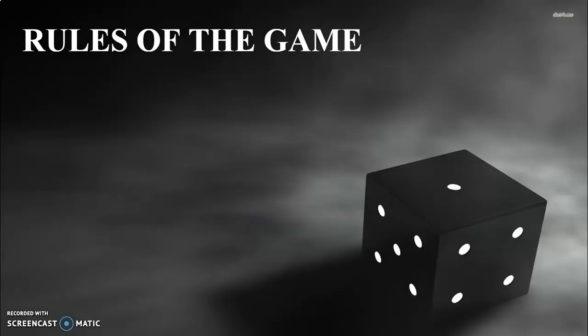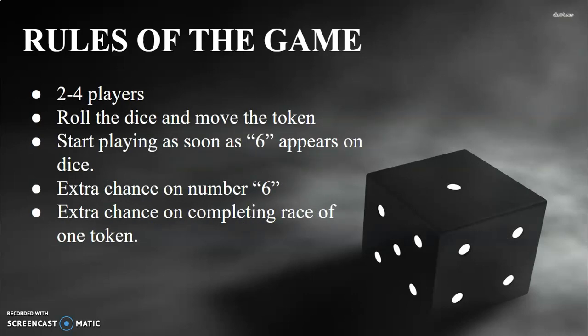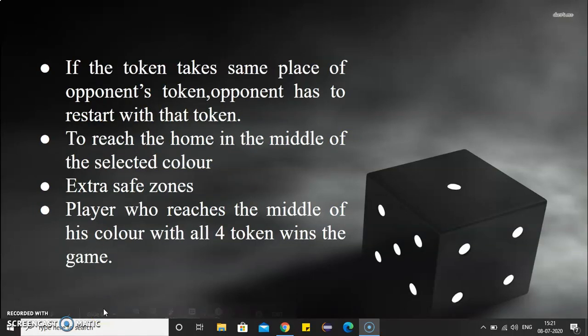Now come the rules of the game. It's a game between 2 to 4 players. You roll the dice and move the token. You start playing as soon as a 6 appears on the dice, and there's an extra chance on rolling a 6. There's also an extra chance on completing a lap with one token. If your token lands on an opponent's token, the opponent must restart with that token. The final aim is to reach the home in the middle of your selected color, with safe zones along the way. The player who gets all 4 tokens to the middle wins.